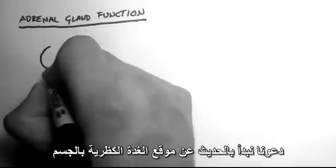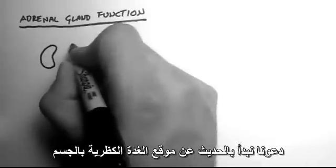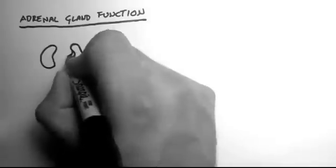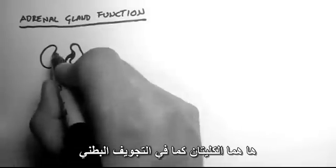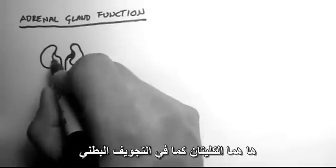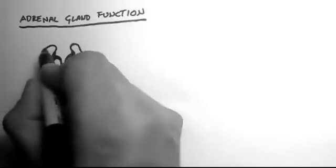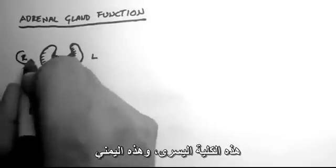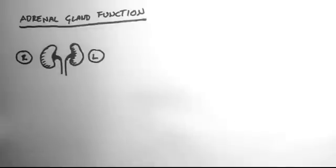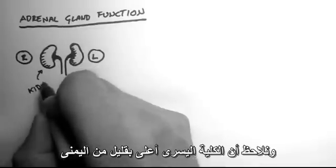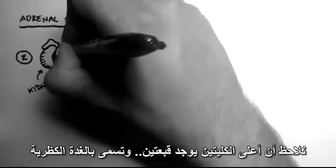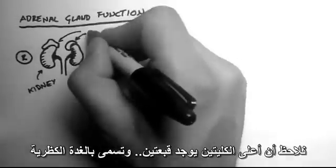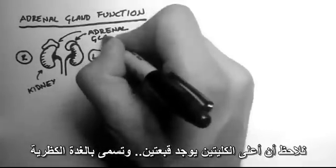Let's start off by talking about where the adrenal glands are located. Here are the kidneys and they are situated in the abdomen — this is the left side and the right side. The left is a little higher than the right. Now on the left kidney and the right kidney are these two little hats, and they are called the adrenal glands.